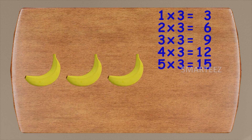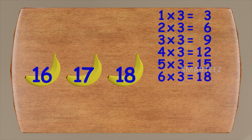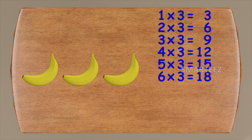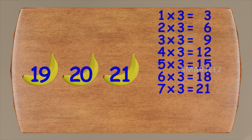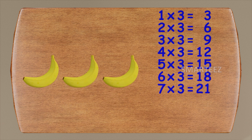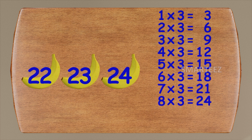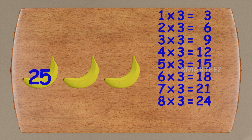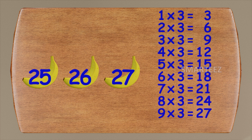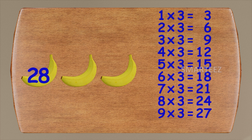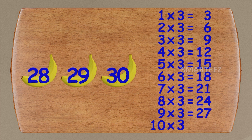Let's add three more. We had fifteen earlier. This will be sixteen, seventeen, and eighteen. Six times three is eighteen. Let's add three more. This will be nineteen, twenty, and twenty-one. Seven times three is twenty-one. Let's add three more. This will be twenty-two, twenty-three, and twenty-four. Eight times three is twenty-four. Let's add three more — that will be twenty-five, twenty-six, and twenty-seven. Nine times three is twenty-seven. Let's add three more one last time. This will be twenty-eight, twenty-nine, and thirty. Ten times three is thirty.